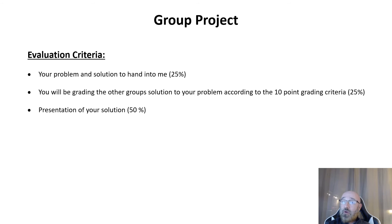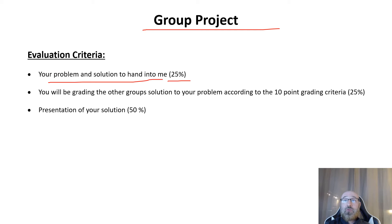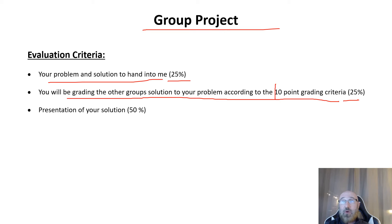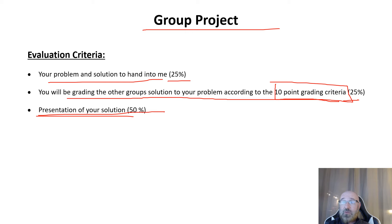Here's how your grade breaks down for the group project. 25% is based on your solution to your own problem that you handed in. Another 25% is based on the grade the other groups gave you using the 10-point grading criteria we've seen all semester. The last 50% is based on your video presentation due on May 6.